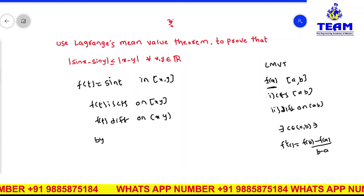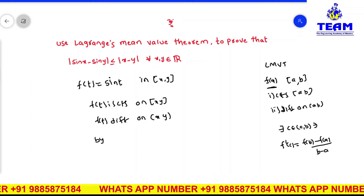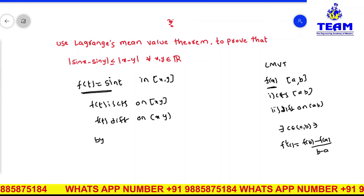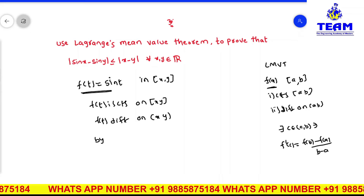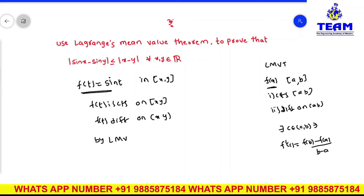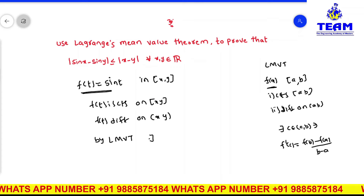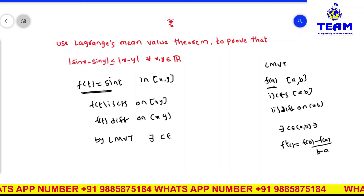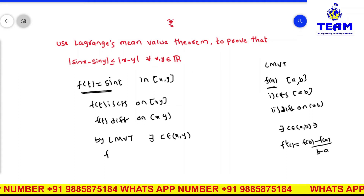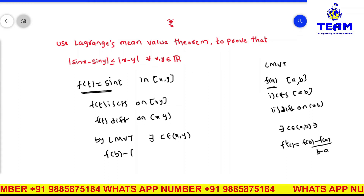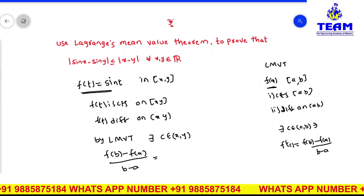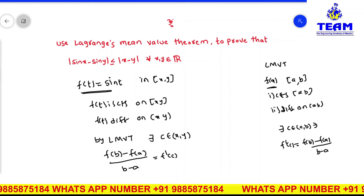By LMVT, f of t satisfies Lagrange's mean value theorem — both conditions are satisfied. So we can apply LMVT. By Lagrange's mean value theorem, there exists c belonging to the open interval x comma y such that f of b minus f of a divided by b minus a is equivalent to f dash of c.